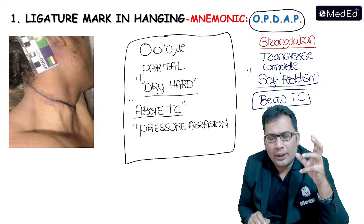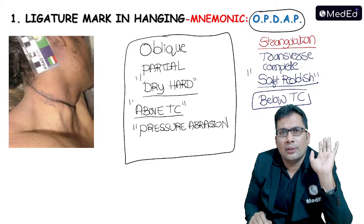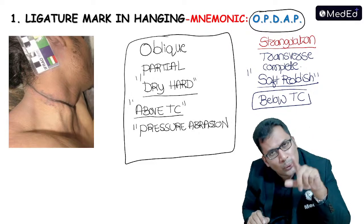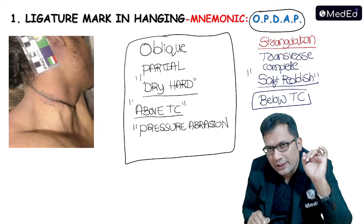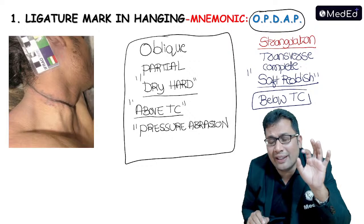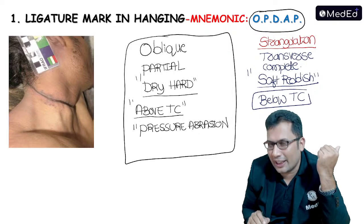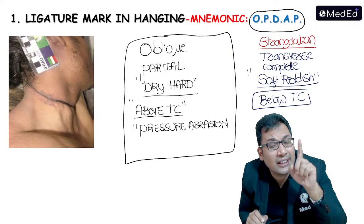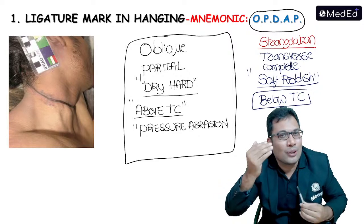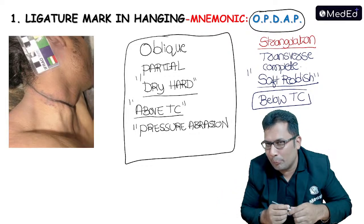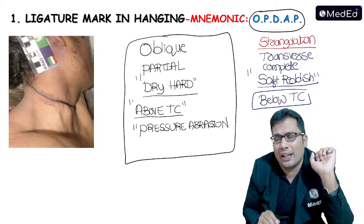Once again: transverse ligature mark is seen in partial hanging or in case of low point of suspension. Pseudo ligature mark is seen in infants or obese persons, where skin folds can resemble a ligature mark. One more question: the cheese cutter method — when a narrow metallic wire is used, that method is known as the cheese cutter method, where the ligature mark is deep, cutting the underlying structures.